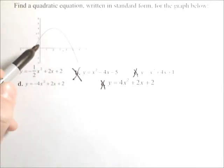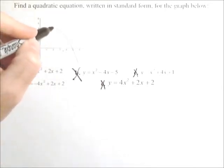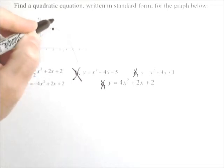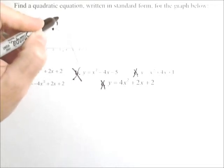Now, the other thing we know, we can find the vertex here. It looks like it's about at the point two, four.